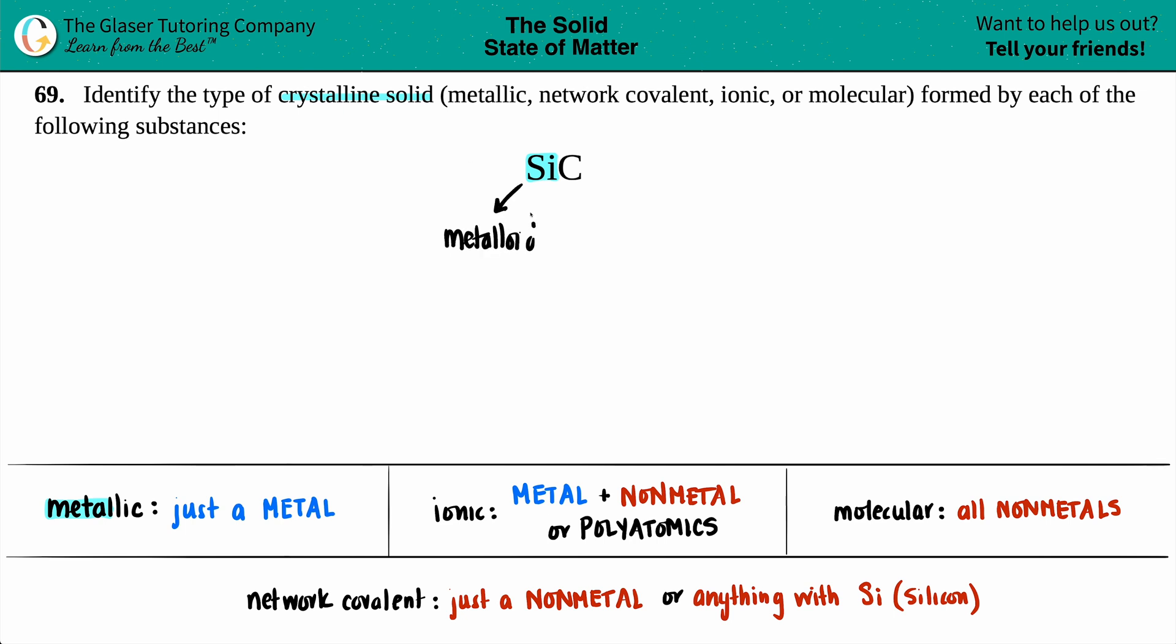So this is one of your elements that has both metal and non-metal properties. But carbon, on the other hand, is purely a non-metal. It's on the right side of the periodic table. So here, since I don't just have a single metal, for example, it would be just like copper or iron, this would not be a metallic crystalline solid.